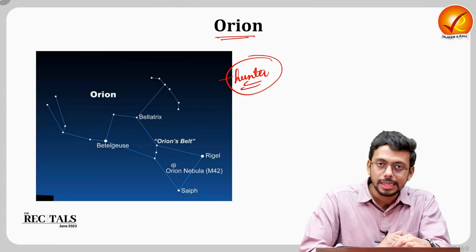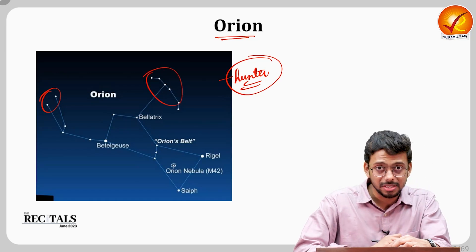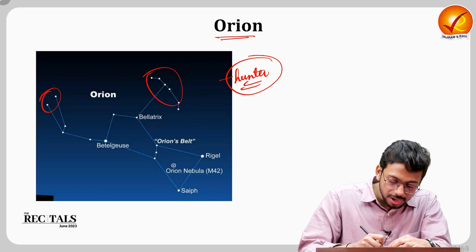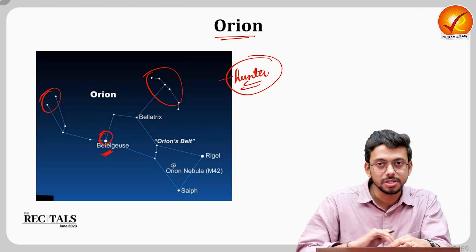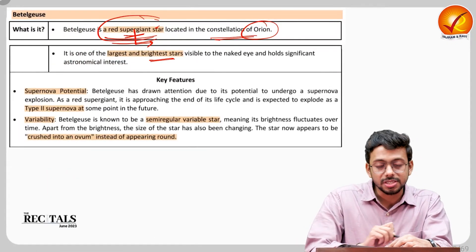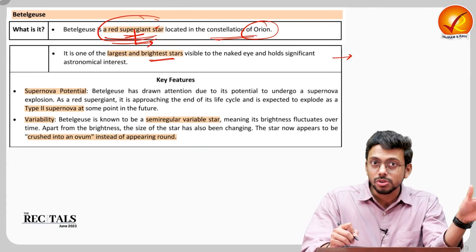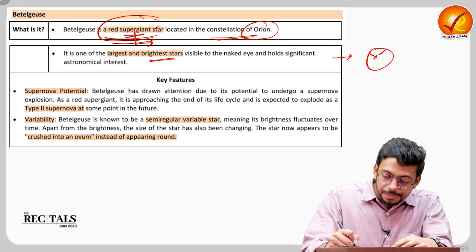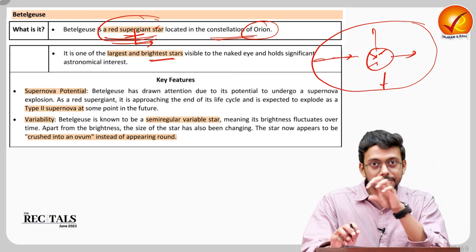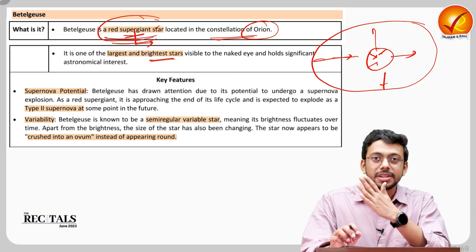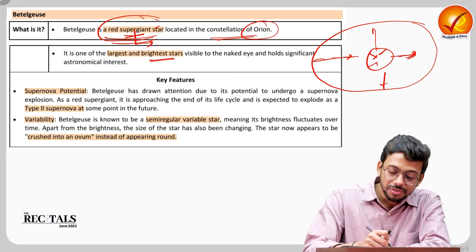Orion looks like a hunter — that is why it's also known as the hunter constellation. You can see the body, the hand, and the axe it is holding. Betelgeuse is located at a specific position within Orion. It is one of the largest and brightest stars. It is large because it has entered the old age phase, where the core shrinks but the outer layers expand enormously — if placed where our sun is, it would engulf Earth and even Jupiter and Saturn.